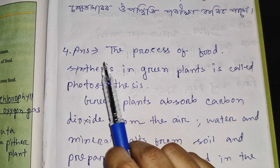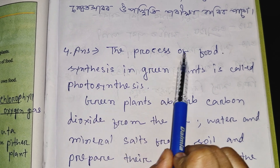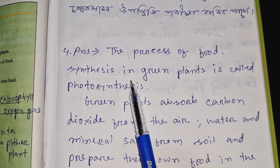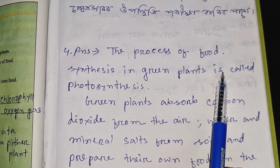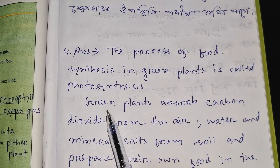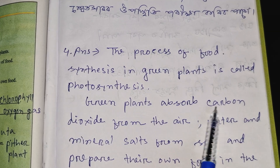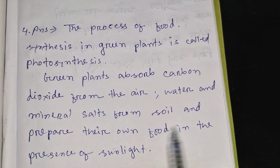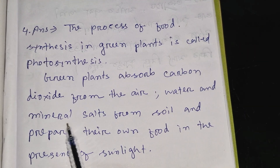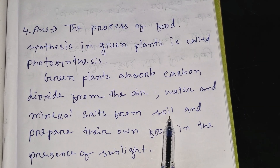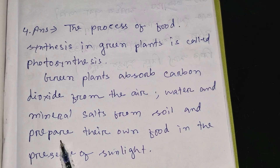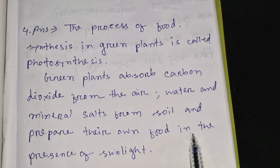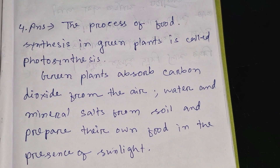The process of food synthesis in green plants is called photosynthesis. Green plants absorb carbon dioxide from the air, and water and minerals from the soil, and prepare their own food in the presence of sunlight.